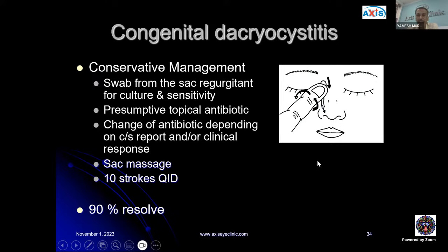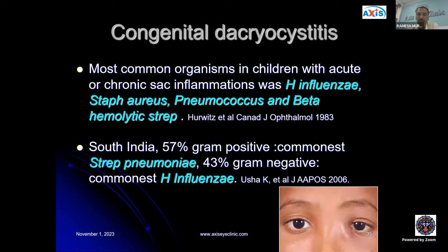The Kricgler's Hydrostatic Massage involves pressing the sac contents downward to drain toward the nasal cavity — about 10 strokes four times a day. Conservative management is effective, resolving 90% of cases. The most common organisms in children with acute or chronic sac inflammation include Haemophilus influenzae, Staph aureus, Pneumococcus, and Beta-Hemolytic Streptococcus. In one South India study, the commonest organism was Streptococcus pneumoniae followed by Haemophilus influenzae.